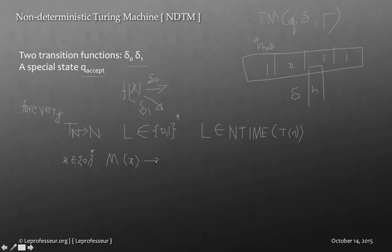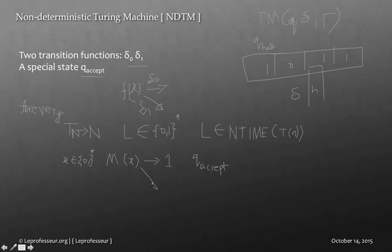If the machine produces output 1, it means it is reaching the q_accept state via either delta 1 or delta 2 transition functions. If it produces 0, it does not reach q_accept and instead reaches HALT. The important takeaway is that the non-deterministic Turing machine has two transition functions.